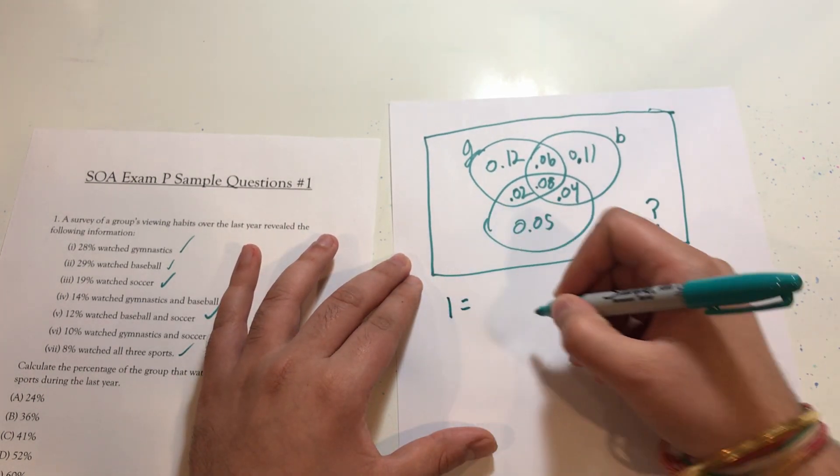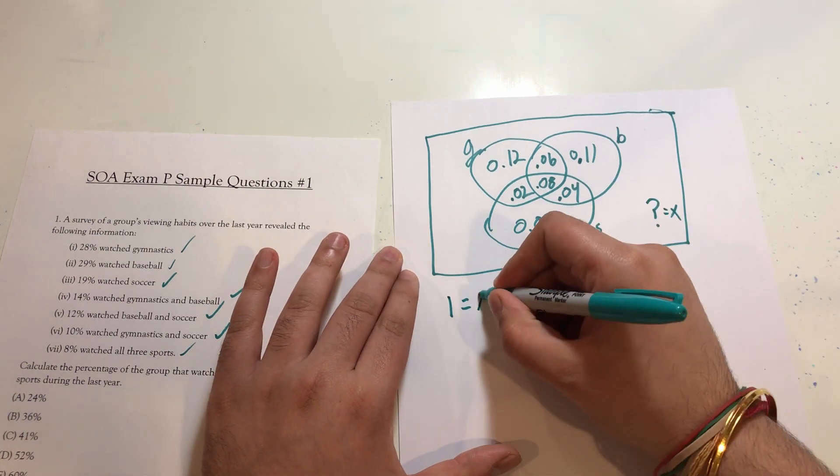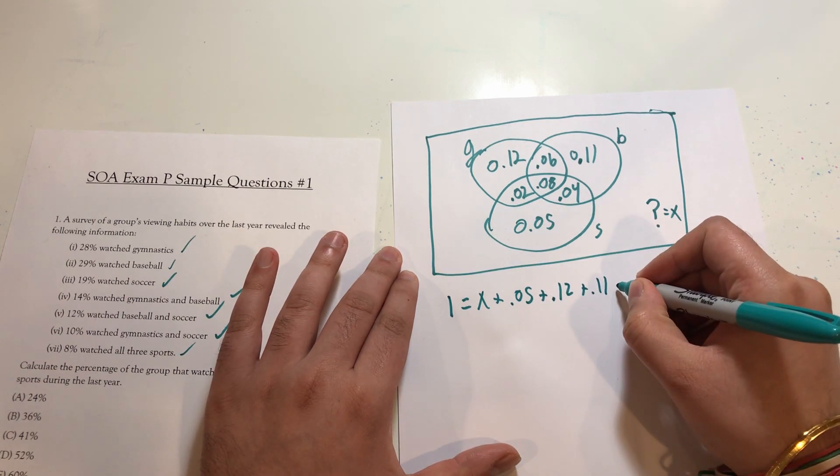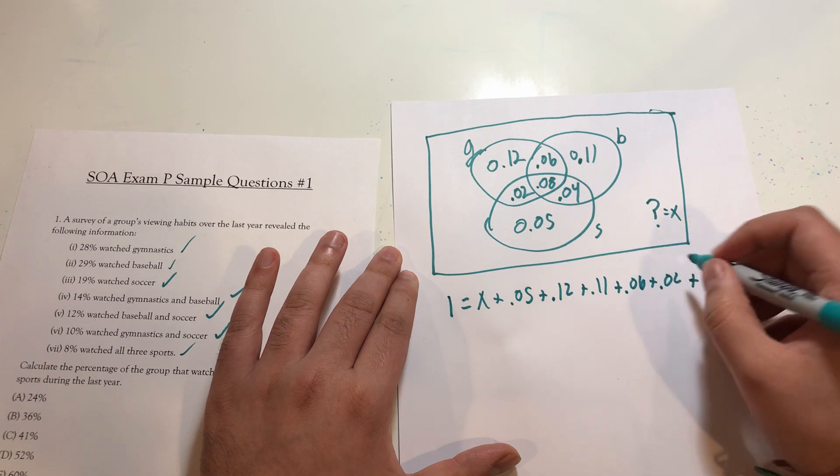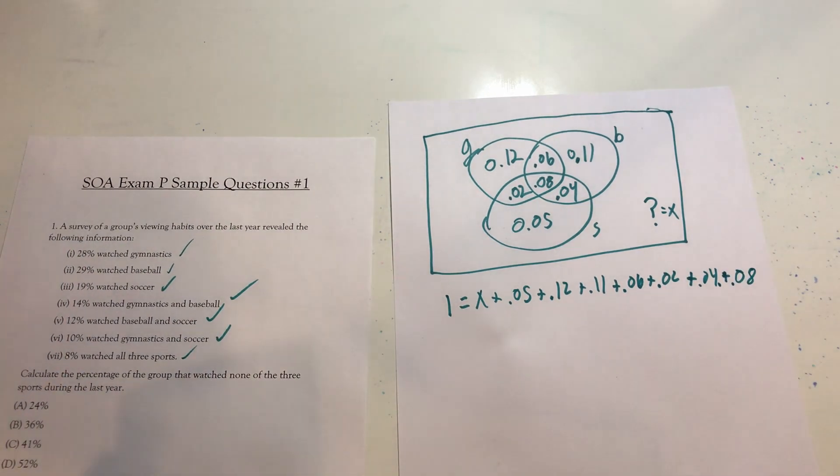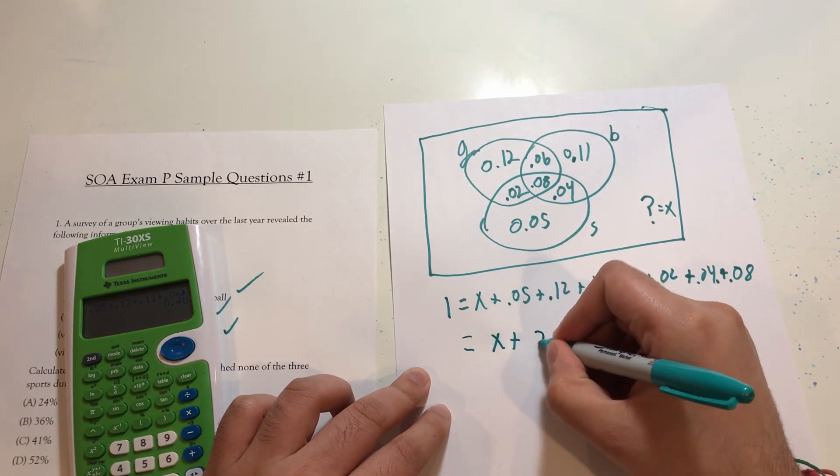So one should be equal to, and I'll just set this equal to X. The percentage of the group that watched none of the sports will be equal to X. So X plus 0.05 plus 0.12 plus 0.11 plus 0.06 plus 0.02 plus 0.04 plus 0.08. I'm just going to add that up. And that gets me X plus 0.48.